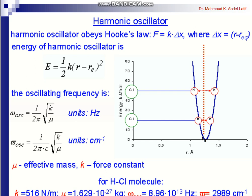Welcome to the third lecture of infrared spectroscopy. To study the energetics, we use the harmonic oscillator model, which obeys Hooke's law. The potential energy of the harmonic oscillator is given by ½Kx², where x is R minus R₀. If you fix one atom and compress or elongate the other to a given position, you get a parabola.